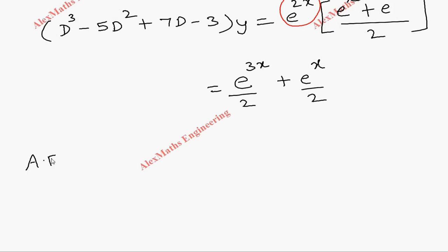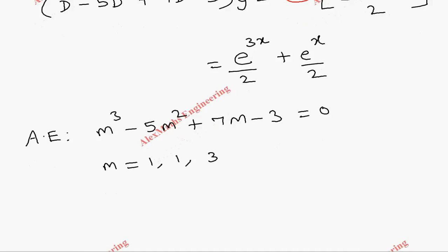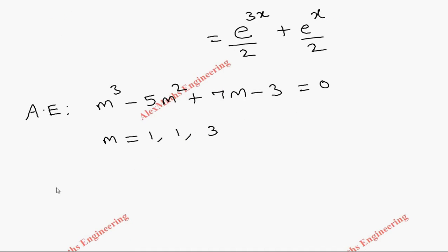Now we write the auxiliary equation: m³ - 5m² + 7m - 3 = 0. Solving using a calculator, we get the values for m as 1, 1, and 3.